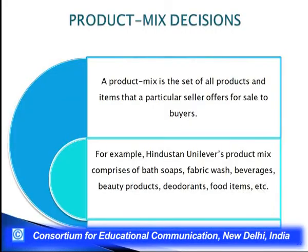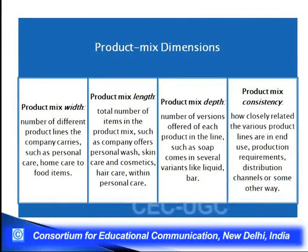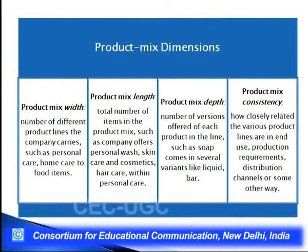I would be discussing about product mix decisions. A product mix is the total assortment or set of all the products and items that a particular seller offers for sale to buyers. For example, HUL's product mix comprises several ranges of bath soaps, fabric wash, beverages, beauty products, deodorants, and food items — all these items in totality comprise the product mix of a company.